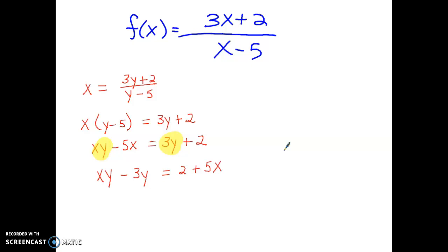I have two terms that have letter y in it. I'm going to use factoring. Both of those terms have the common factor of the letter y. So I'm going to factor the y out. So that means this expression is the same as y times the quantity x minus 3.